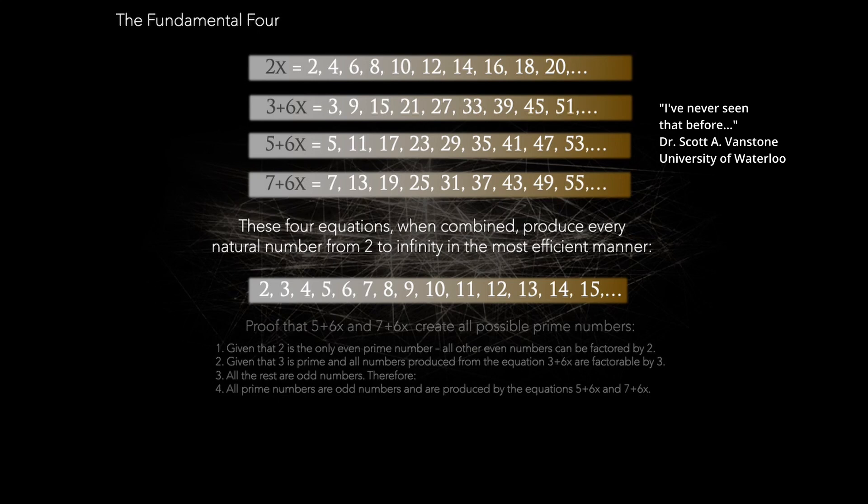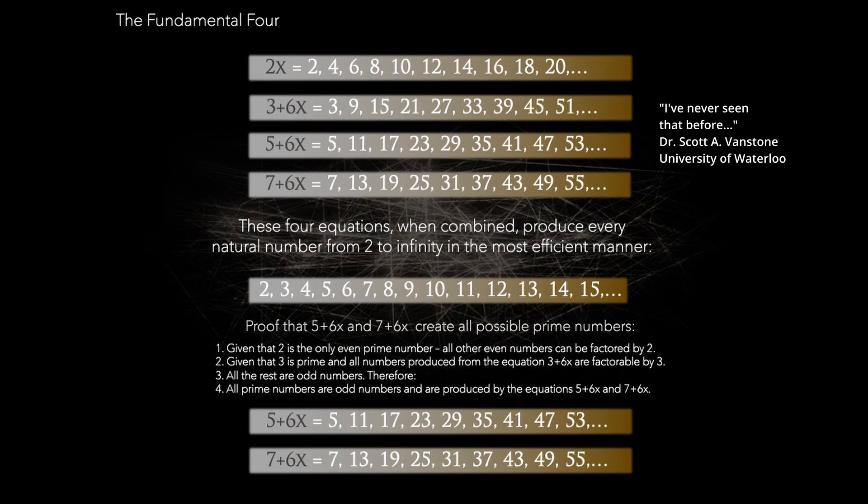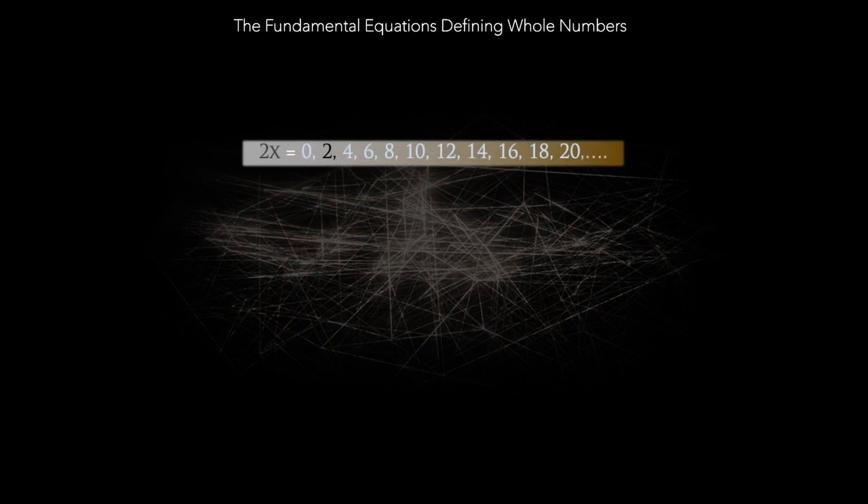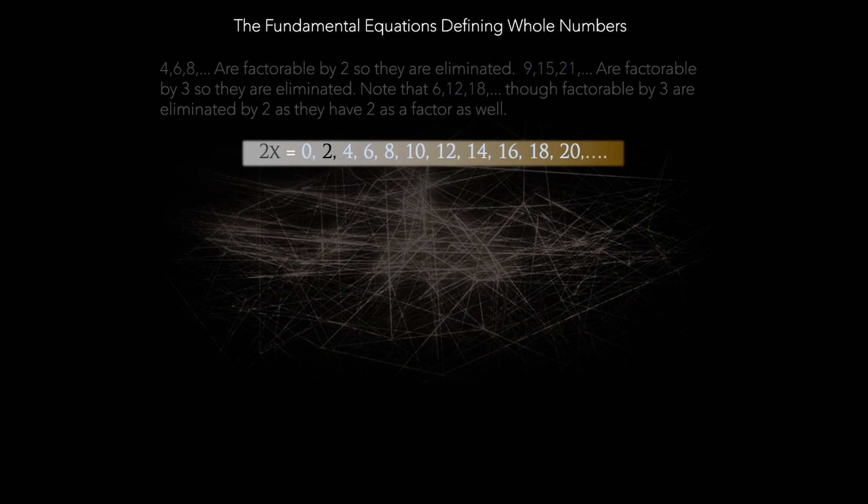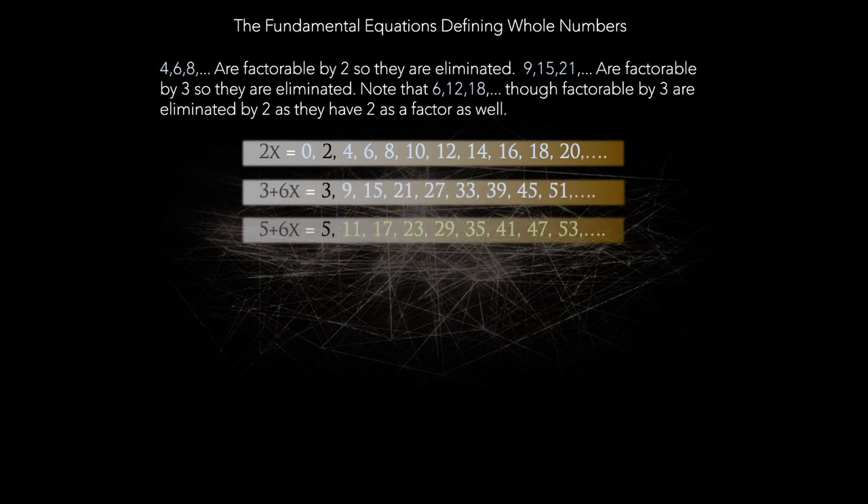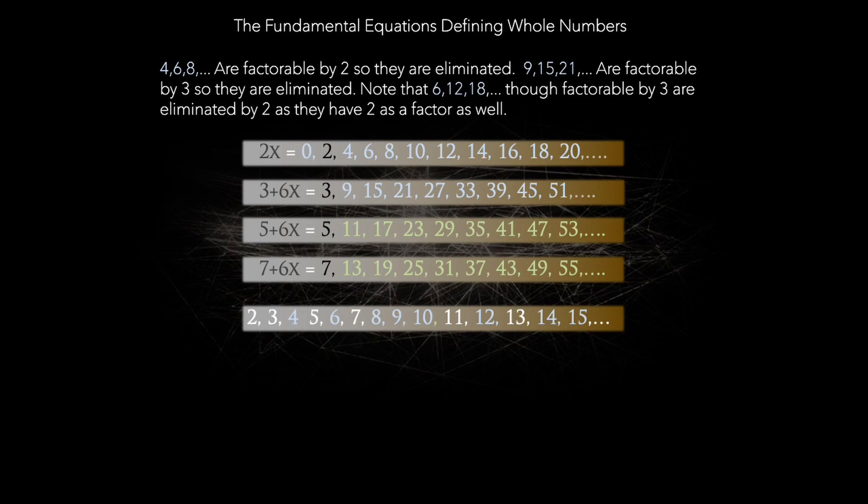Let's put our equations to the test. When we combine them, we get a sequence that looks remarkably similar to the prime number sequence. The only difference is a few composite numbers that need to be examined. The challenge now is to eliminate these remaining composite numbers. But how? The key lies in understanding the patterns in these composite numbers. They're not random. They follow precise, predictable sequences based on our initial fundamental equations. This is the breakthrough.